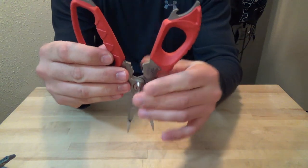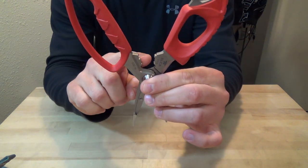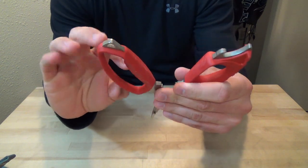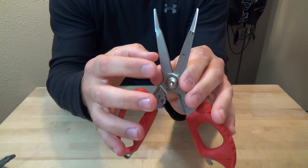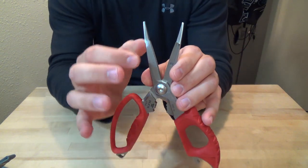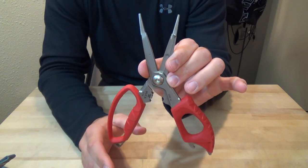There's a crimping section for your split shots and whatnot. Bottle opener, another spot here for your lanyard or clip. There's two types of blades in here. One is a ground straightedge. The other is a micro serration, which is going to allow you to cut braid like butter.